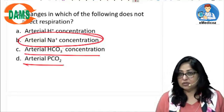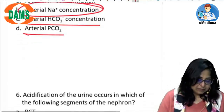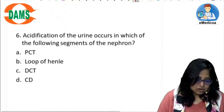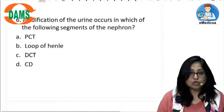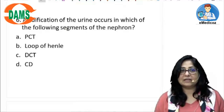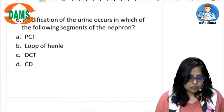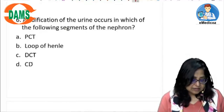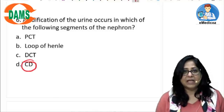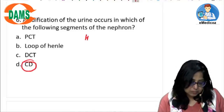But arterial sodium concentration has no effect on respiration. Now let's have a look at the next question: acidification of the urine occurs in which of the following segments of the nephron? Acidification of the urine occurs in the collecting duct. H+ secretion occurs in two main places.